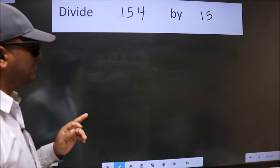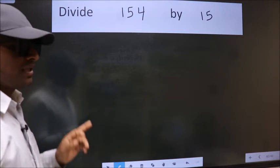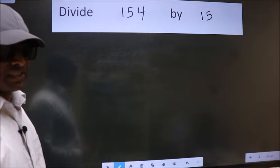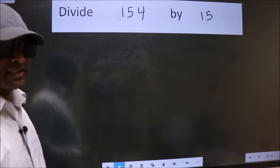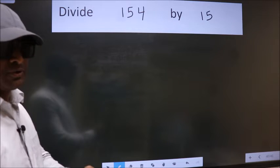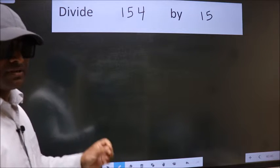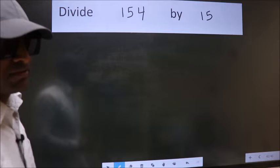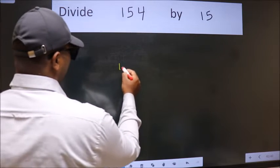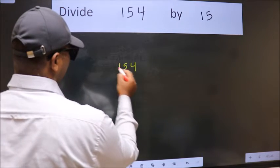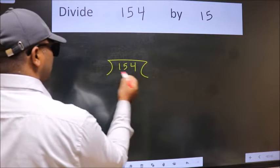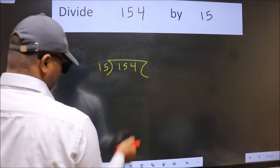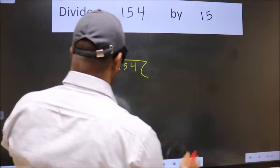Divide 154 by 15. While doing this division, many do this mistake. What is the mistake that they do? I will let you know, but before that we should frame it in this way: 154 here, 15 here. This is your step one.